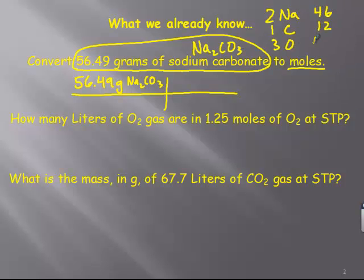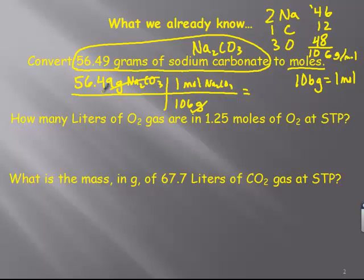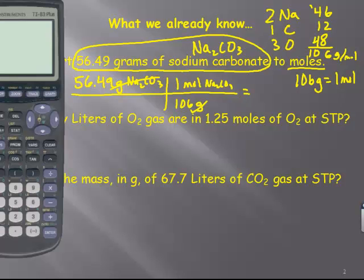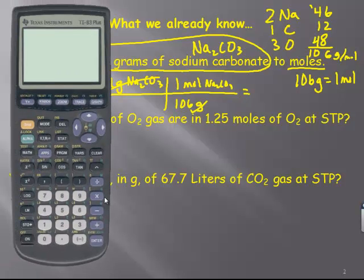That's what starts our dimensional analysis chart here, where we're going to start canceling out units that we don't want and end up with the units that we want. So in order to do that, I have grams that I'm starting with. I want moles that I'm going to end up with. Well, the way you go from grams to moles is the conversion factor, the molar mass. So I need to have two Na's, one C, three O's from the formula for sodium carbonate. 23, so that's 46, 12, 3 times 16 is 48, add them up, and we get 106.